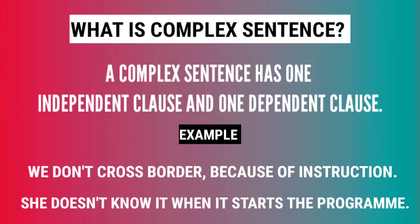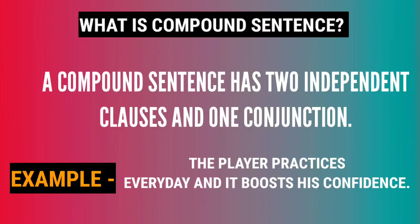The last type is the compound sentence. A compound sentence has two independent clauses and one conjunction. For example: 'The player practices every day and it boosts his confidence.' In this sentence you can see two parts and both are independent.